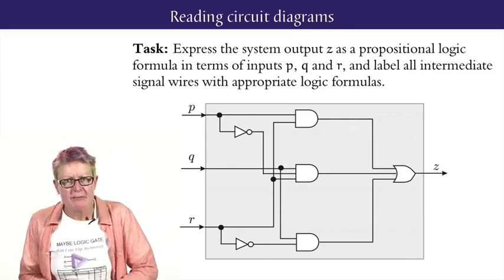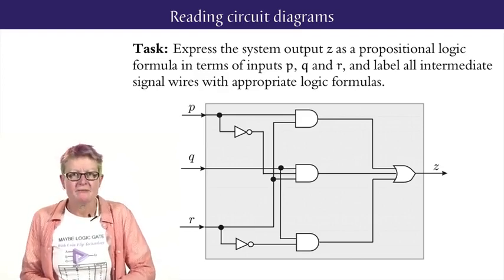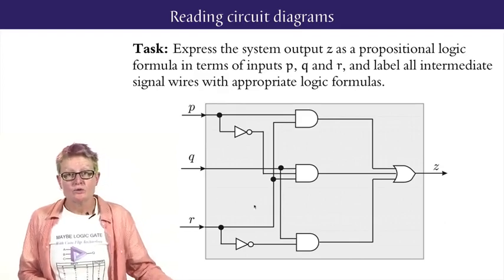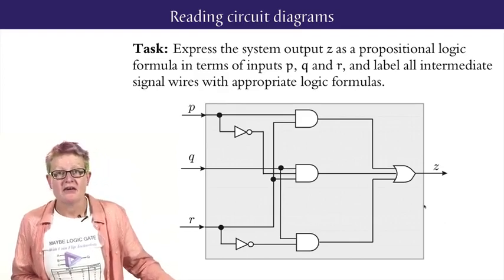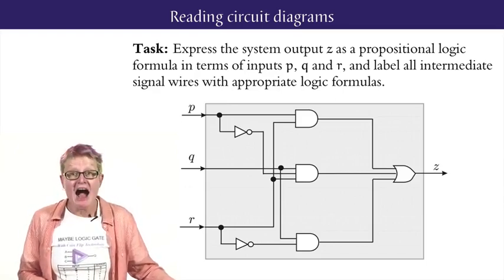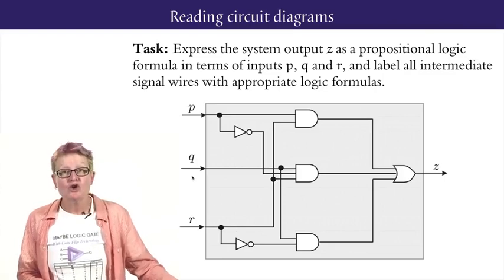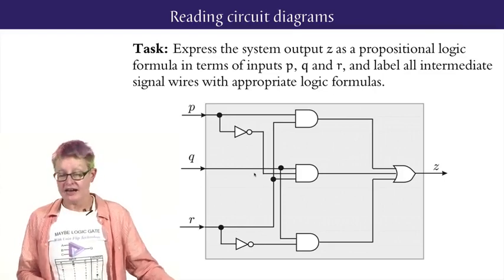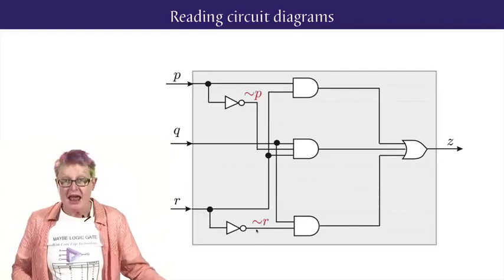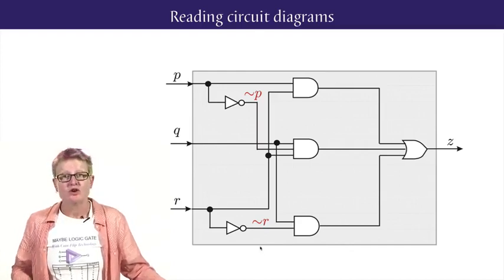Let's look at an example, with three inputs P, Q and R, and one output Z. Starting on the left-hand side for the inputs and working towards the right-hand side for the output, we have the input signals P and R both branched and negated, while the middle input Q is fed in without negation. So we get NOT P and NOT R as the outputs of the respective NOT gates.